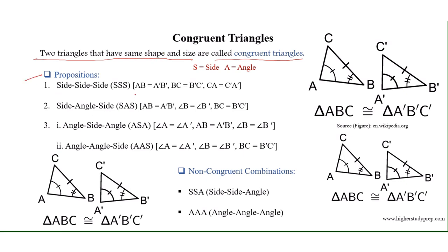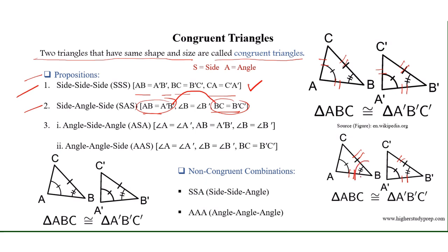If the three sides of two triangles are equal — AC equals A'C', AB equals A'B', and BC equals B'C' — the triangles are congruent (SSS). Alternatively, if two sides, for example AB equals A'B' and BC equals B'C', and the included angle B equals B', then the triangles are also congruent (SAS).